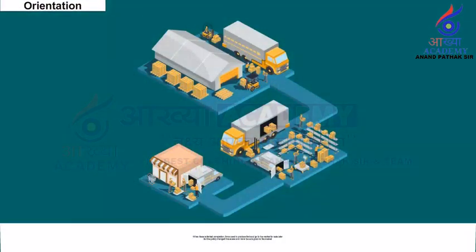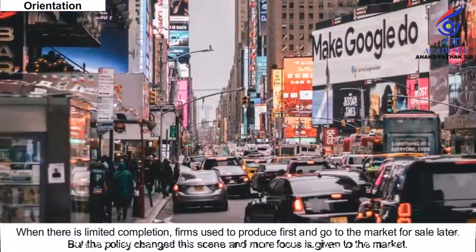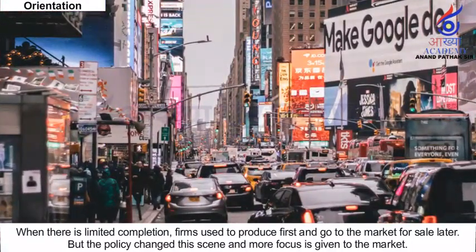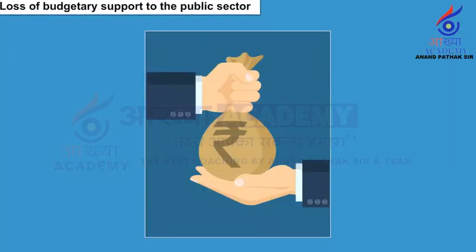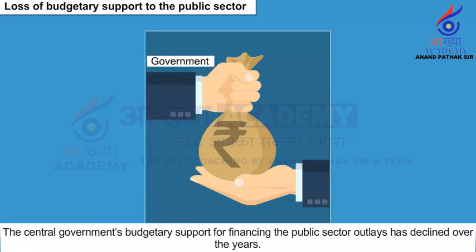Orientation: Where there is limited competition, firms used to produce first and go to the market for sale later. But the policy changed this scene and more focus is given to the market. Loss of Budgetary Support to the Public Sector: The central government's budgetary support for financing the public sector outlays has been declining over the years.